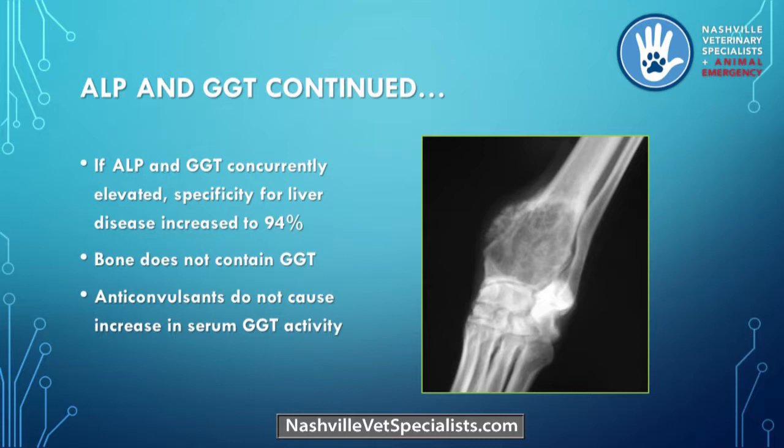Anticonvulsants do not induce GGT. So primidone and phenobarbital — GGT does not get induced by these drugs. If you have elevated GGT activity along with alkaline phosphatase on a phenobarbital dog, it's not from the drug. You have to worry about primary or potentially acquired liver disease.